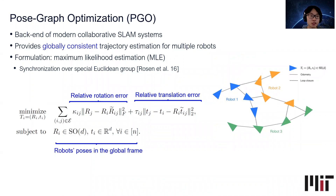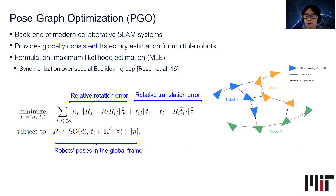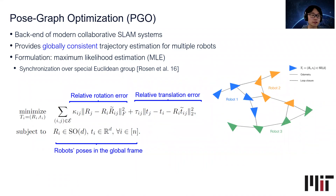Pose-graph optimization is a fundamental problem in robotics, and it is the back-end of modern collaborative SLAM systems. PGO provides globally consistent trajectory estimation for multiple robots. In this work, we consider the maximum likelihood estimation formulation of PGO, which is also known as the problem of synchronization over the special Euclidean group.